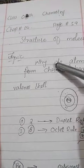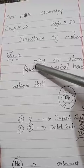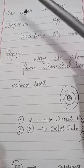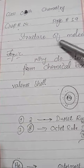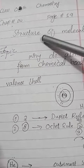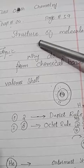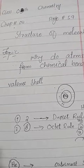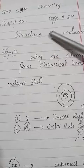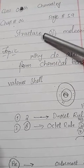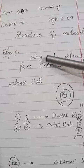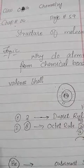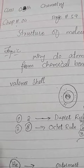Class 9th, today's topic is chapter number 4, which we have started today — the title of 'Structure of Molecule.' In this entire chapter, we will discuss the structure of molecules one by one. Today's topic is: why do atoms form chemical bonds? That is, atoms — why do they form chemical bonds?